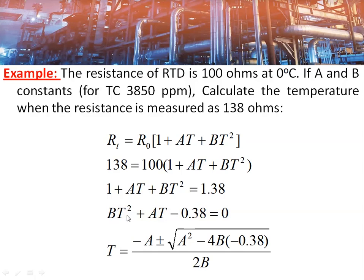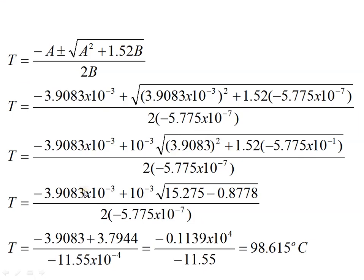This is a quadratic equation of the form ax² + bx + c = 0, whose solution is given by (−b ± √(b² − 4ac)) / 2a. Applying the same here, the temperature is given by: (−A ± √(A² − 4B × constant)) / 2B. Solving this equation, the temperature corresponding to 138 ohms is 98.615°C. If the resistance is 138.5 ohms, the temperature comes out to 100°C — confirming that at 100°C the resistance is 138.5 ohms.